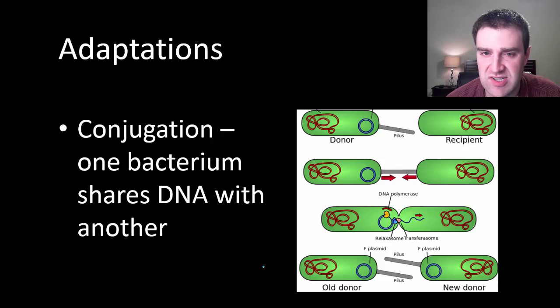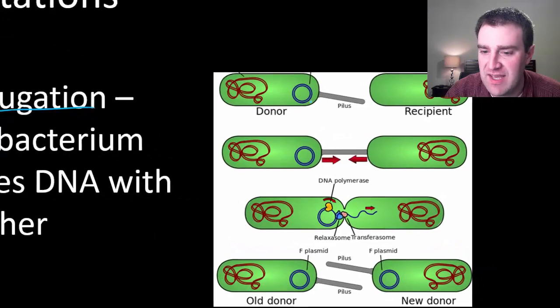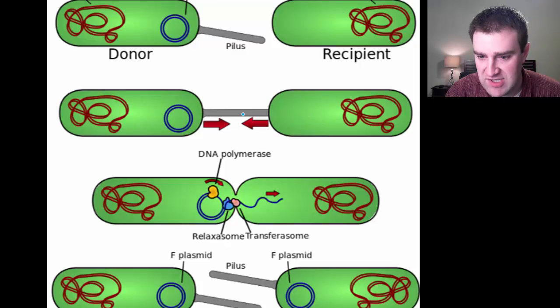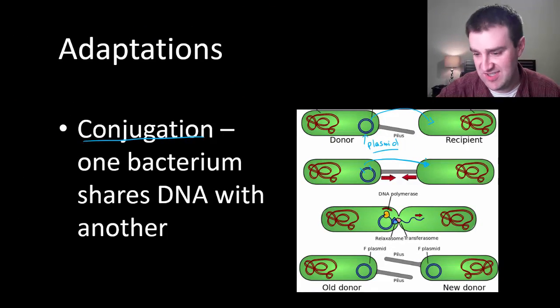But just two other adaptations I just want to close the video with. One of them is this scary ability they have called conjugation. Conjugation is where one bacterium might be able to kind of make a temporary bridge with a neighboring bacterium and share a little bit of DNA with it. As it turns out, this DNA might be on a little circle called a plasmid rather than their whole chromosome that they're sharing. But if those genes for resisting our antibiotic medicines are on this plasmid, then that really means that one bacterium might be able to make another bacterium resistant. And that's kind of scary for us and in our medicines.